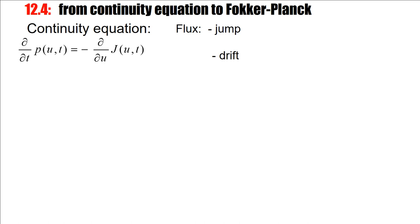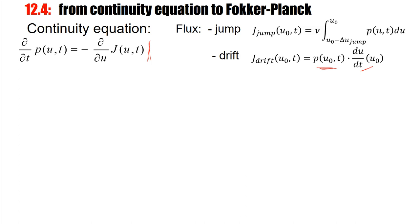Let's start with the analysis. I have here the continuity equation. The drift flux is the density at an arbitrary point U0, proportional to the slope. The jump flux is the spike arrival rate times the density just below this reference value U0.